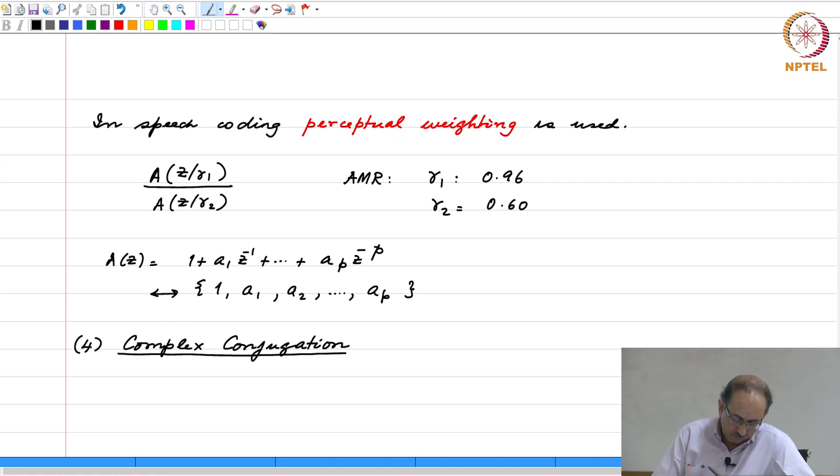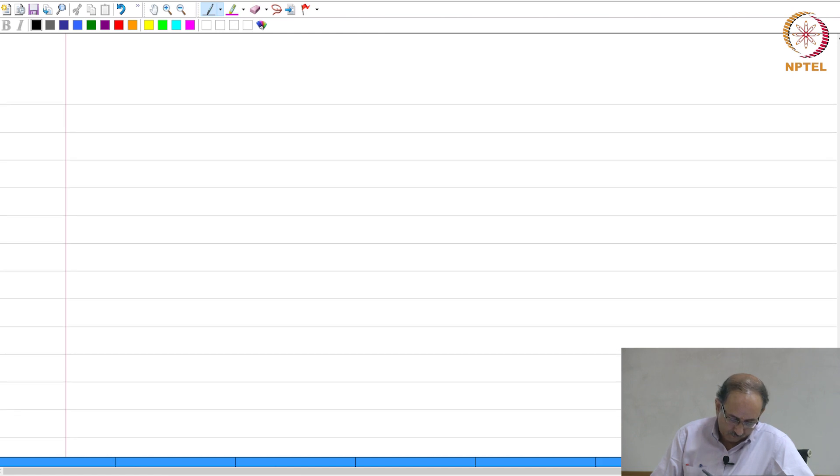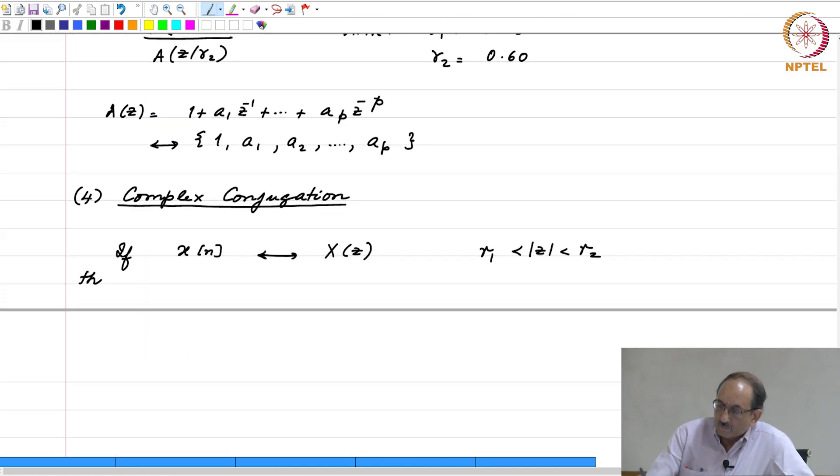We will now look at complex conjugation. If X(n) has Z transform X(z), then X star of n has Z transform X star of z star.